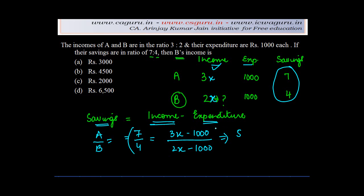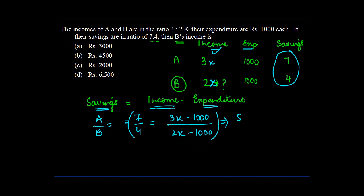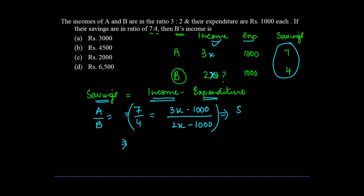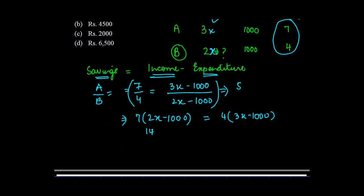So we can find the value of x. We do 7 times (2x minus 1000) equals 4 times (3x minus 1000). 7 times 2x gives you 14x minus 7000 equals 12x minus